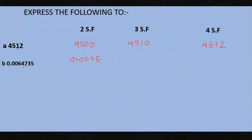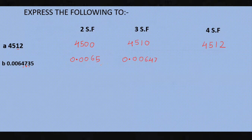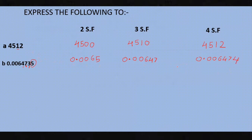For three significant figures, the first three significant digits are 6, 4, and 7. Look at the fourth significant digit, which is 3. Since 3 is less than five, no change. The answer is 0.00647. For four significant figures, look at the fifth significant digit, which is 5 or more, so add one to the previous digit. The answer to four significant figures is 0.006474.